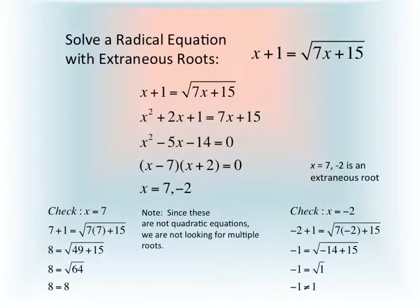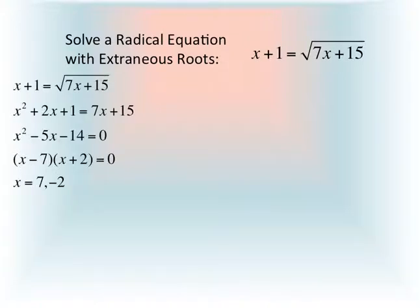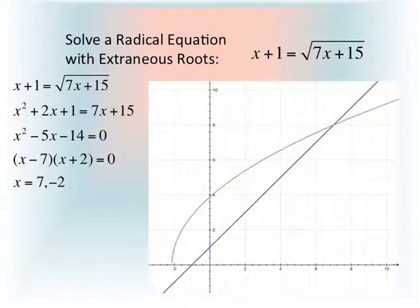Some students might not be completely convinced by this, so a graph is a really good idea. Here's our algebraic work where we found the two possible solutions 7 and negative 2. When we graph this, we get a straight line and a curve.